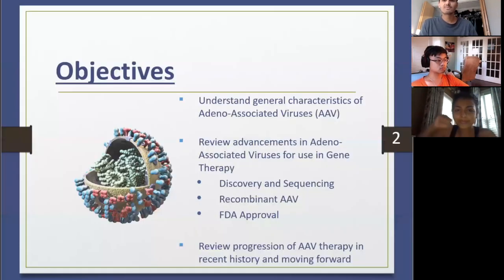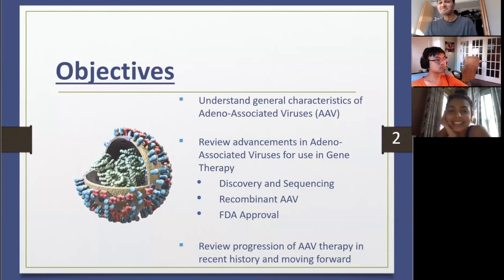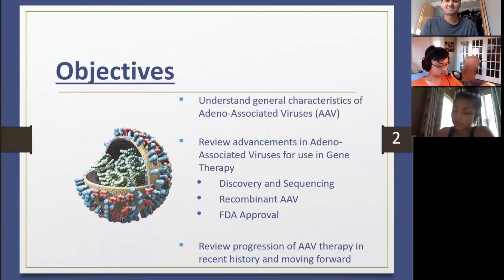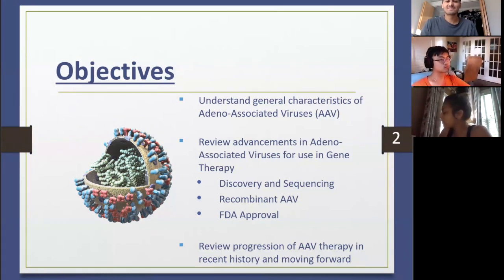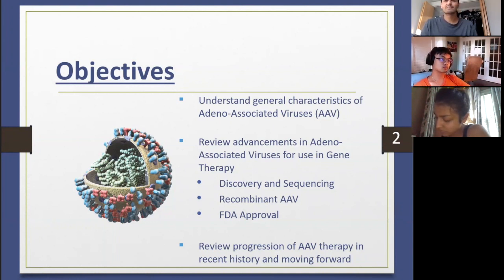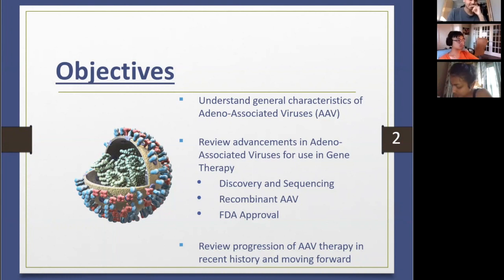As per usual, I have my objectives slide. The main goals are: to understand the general characteristics of adeno-associated viruses — I'll say AAV from now on — then go through three parts of its history: discovery and sequencing, how it started becoming useful in recombinant theory, and finally some FDA-approved therapies. We'll review how research has progressed over the last two decades and how it's moving forward. Feel free to stop me with any questions.